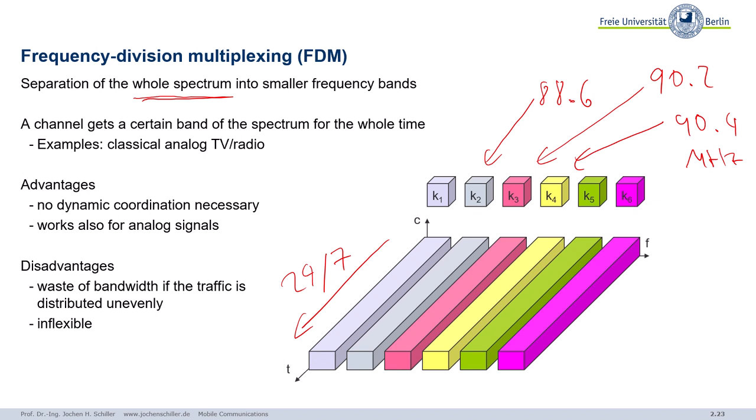FDM is also not very flexible. For example, transmitting a news broadcast requires less bandwidth because it's just human voice, while transmitting a full symphonic concert requires more for high quality. And if a station like k4 doesn't broadcast between midnight and 4 AM, the spectrum at 90.4 MHz sits idle — you cannot easily jump into that empty channel in classical analog systems.